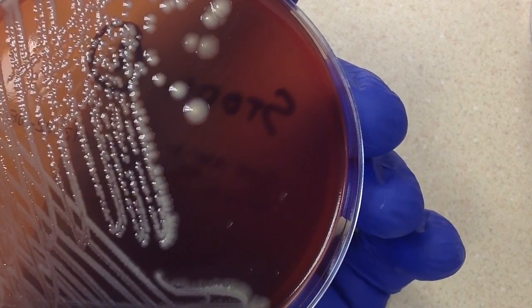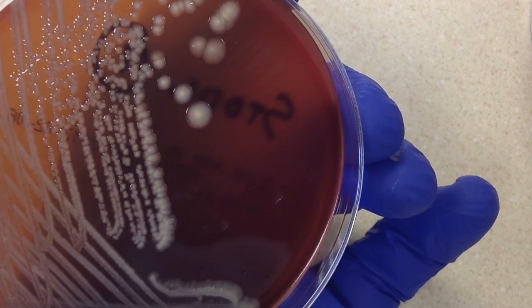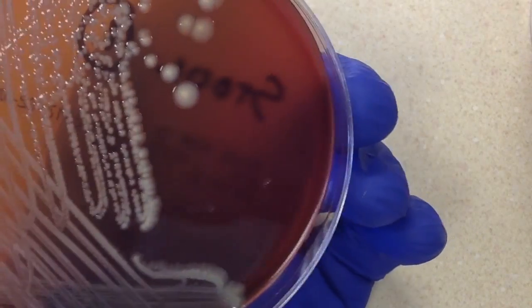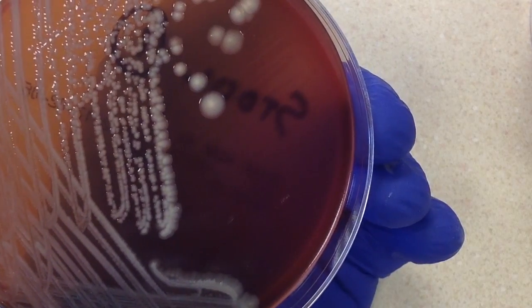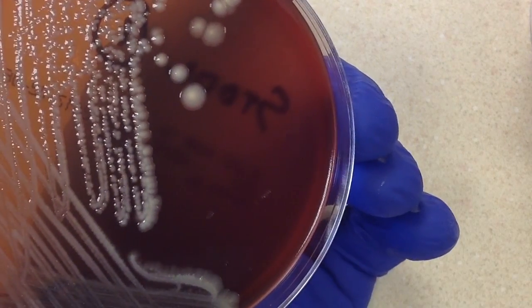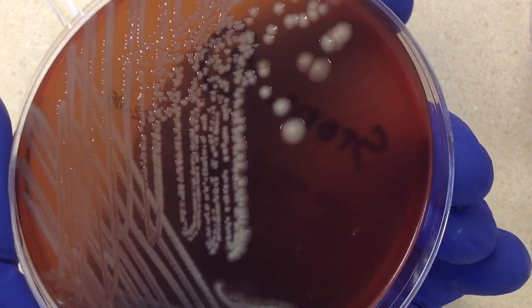But what am I looking for on the sheep blood plate? Staph aureus, which would probably more than likely be a little bit beta hemolytic. This culture is two days old, it's been incubating for 48 hours. Yeast have a definitely recognizable look to them. Just looking at this plate, I don't see either of those. I see just a lot of mixed bacteria here, probably gram-negative rods. I don't see anything here on the sheep blood plate that concerns me.